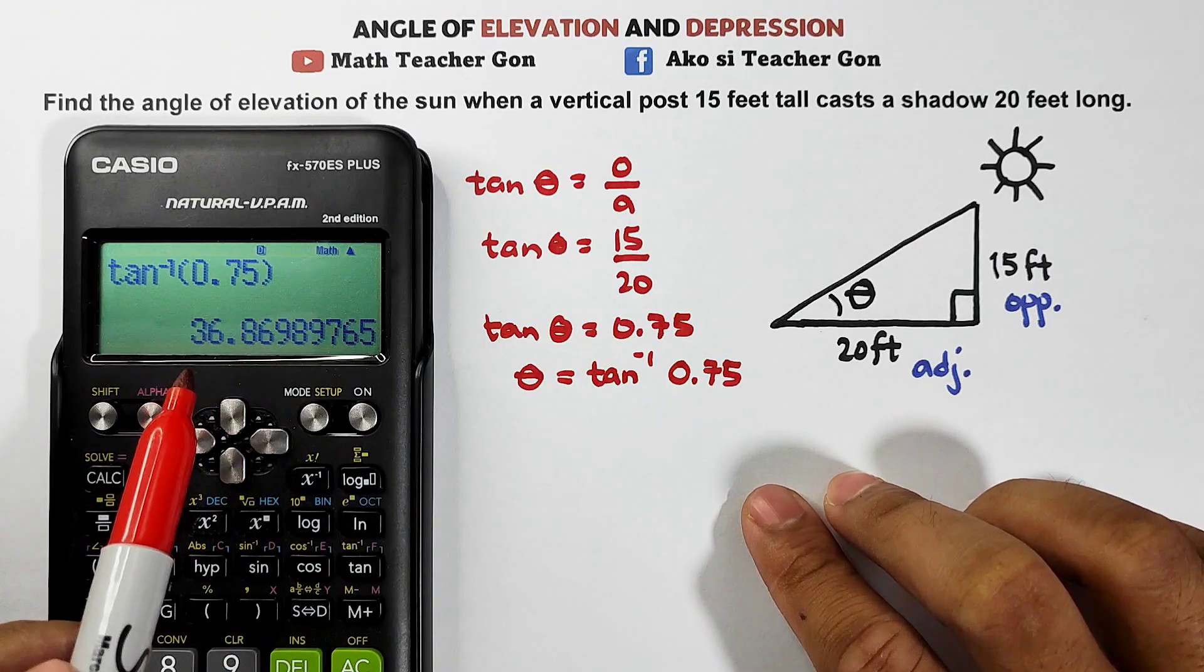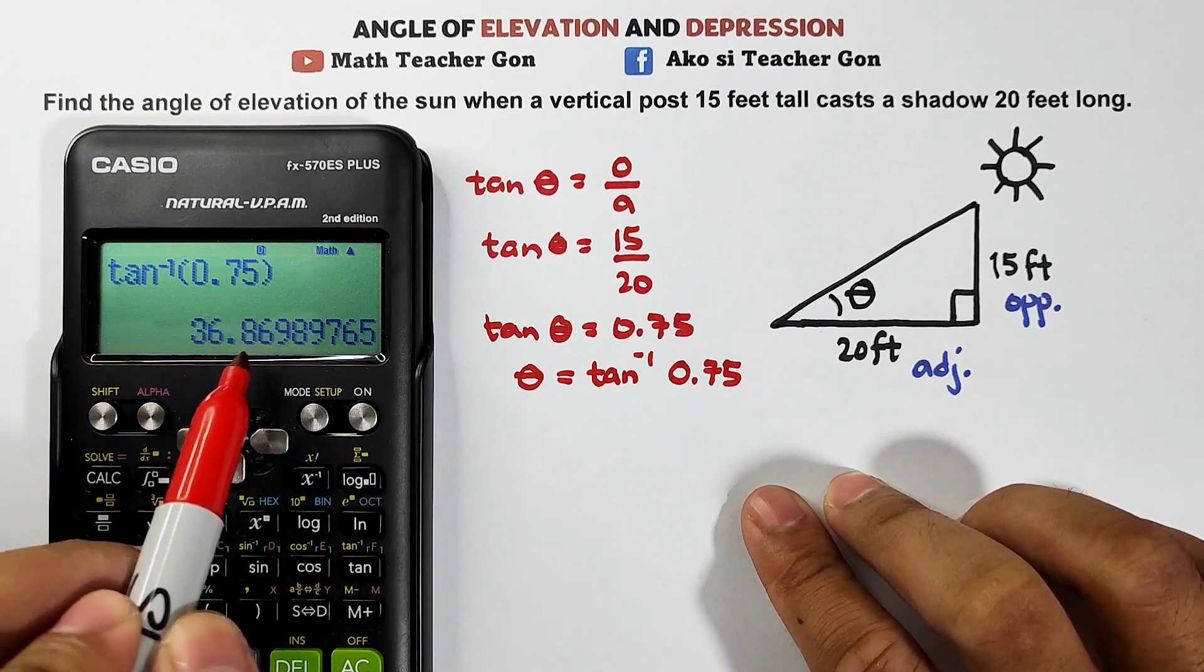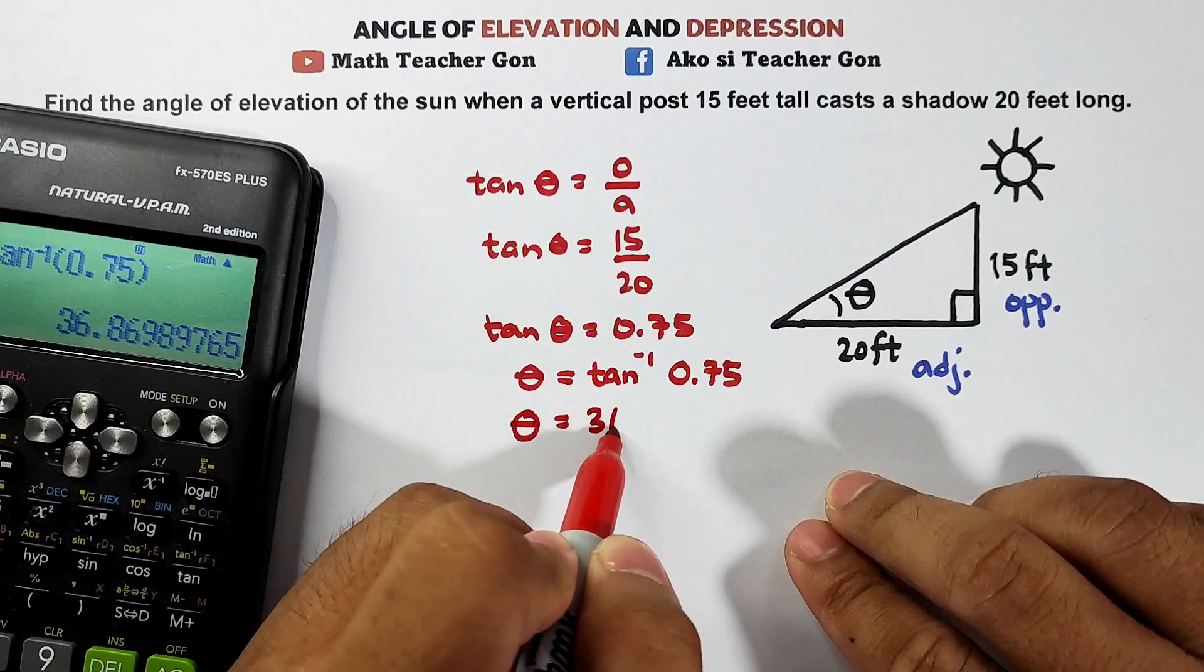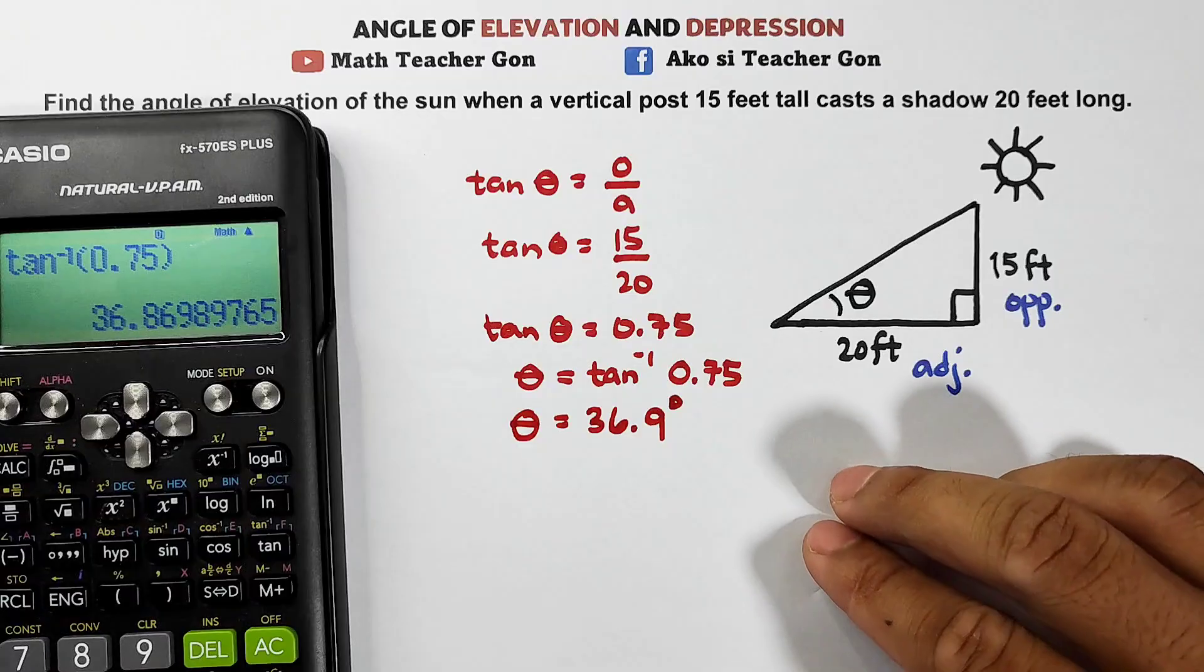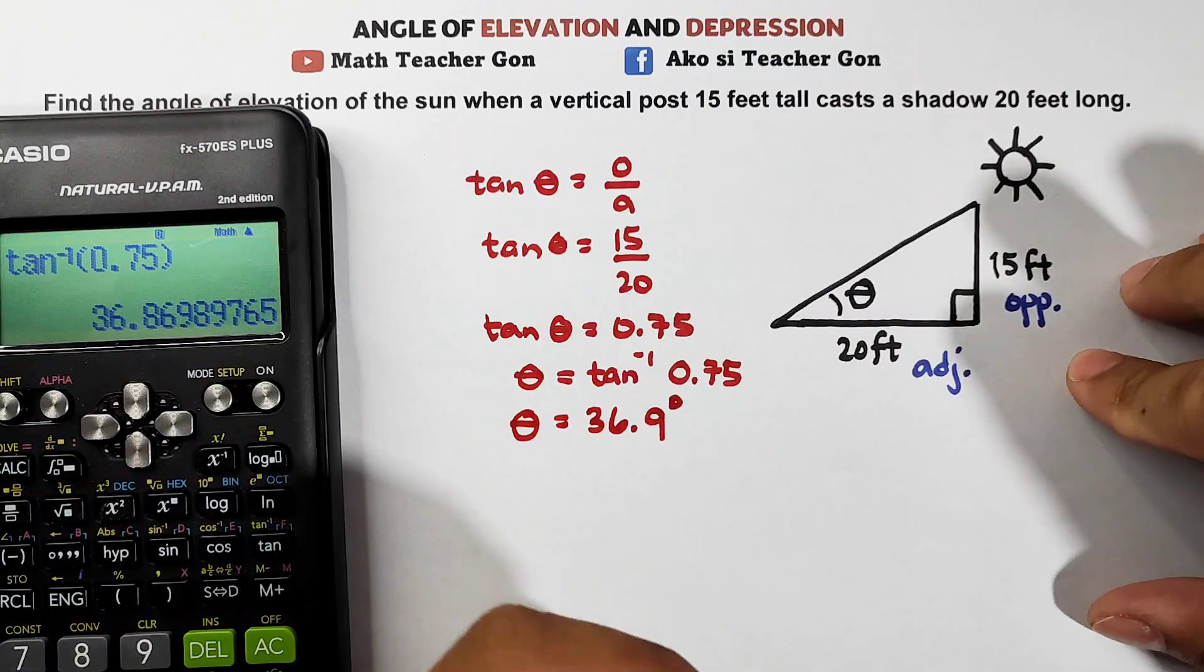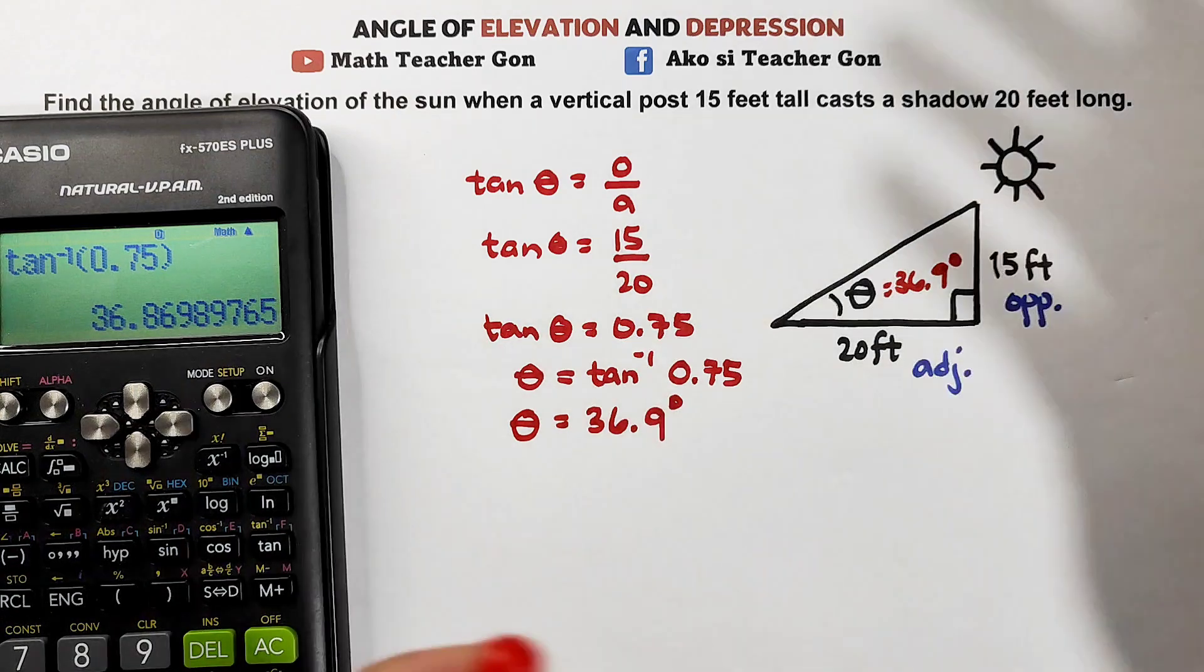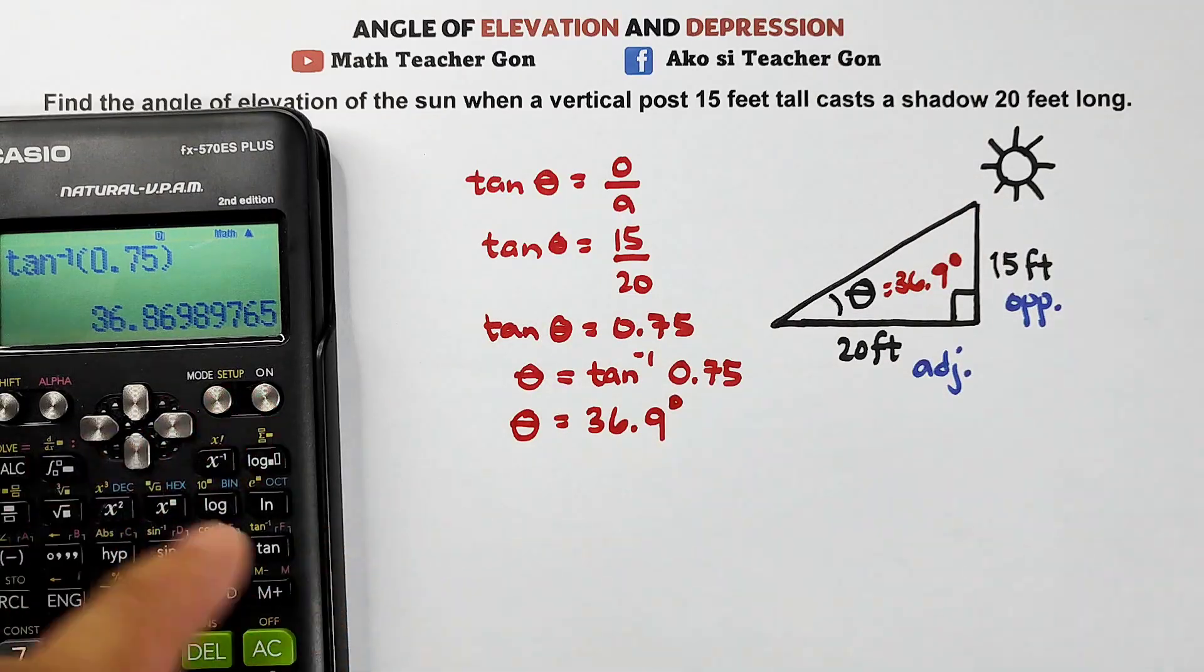So we have now 36.869. So if we round off to a single digit in the decimal place, we'll add to the 8 because 60 is next to 8 on the right side. So that would be your angle theta equals 36.9 degrees. This is the angle of elevation that forms between the line from the ground going to the sun and the shadow. This is 36.9 degrees. So for the first and second examples, I'm giving you elevation but with different approaches.